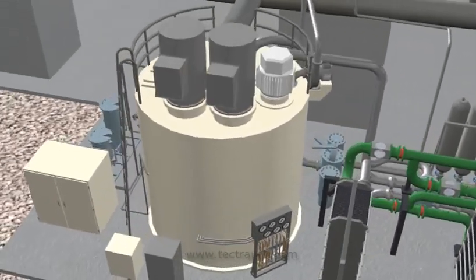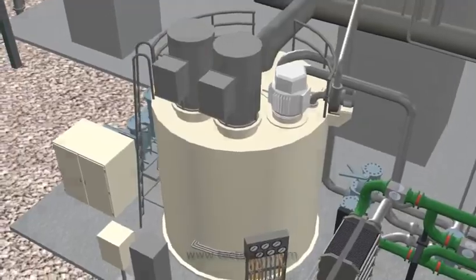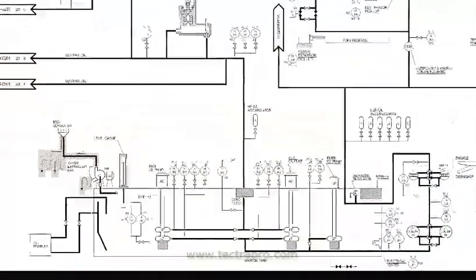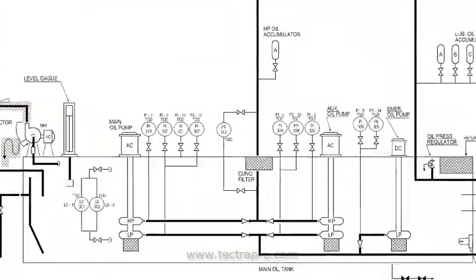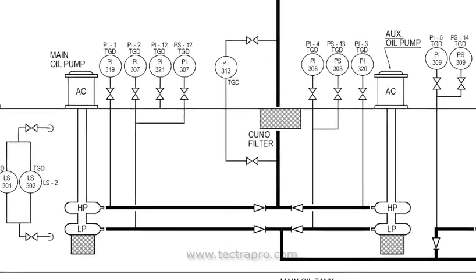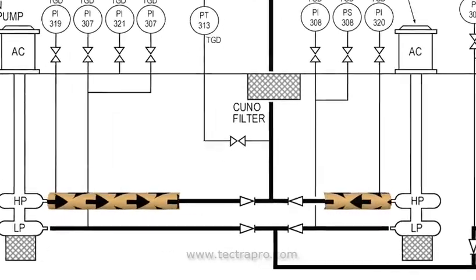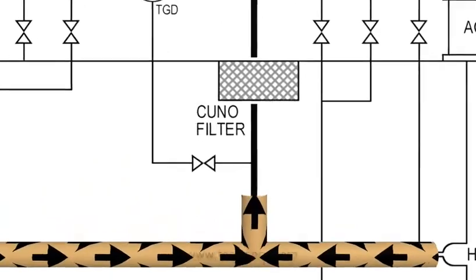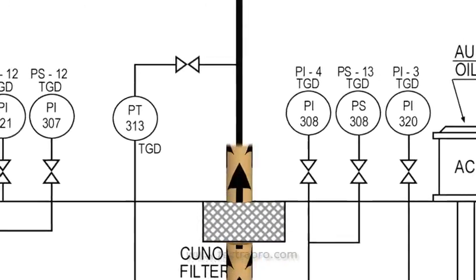Control oil is supplied from the same oil tank as the lubrication oil. High pressure control oil is supplied by the high pressure sections of the main and auxiliary lube oil pumps. The oil passes through a Kuno filter before leaving the oil tank area.